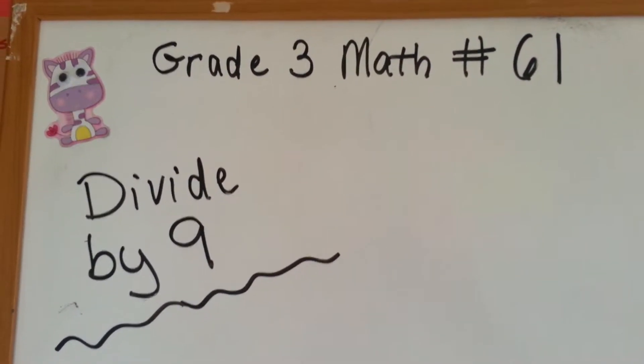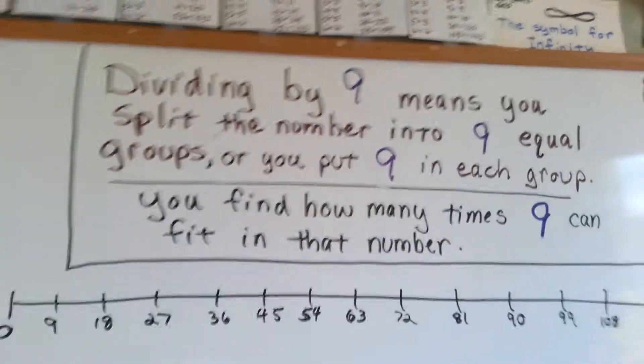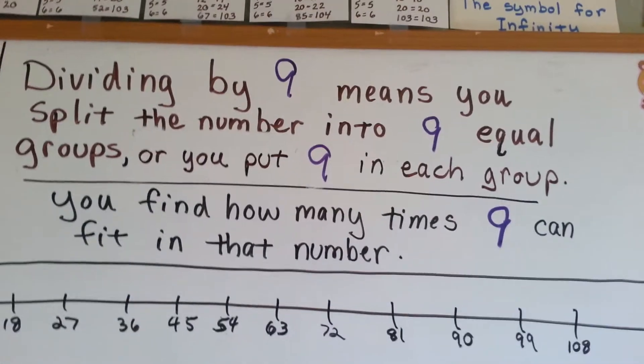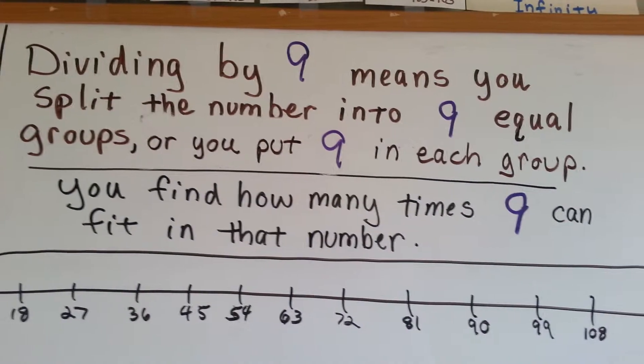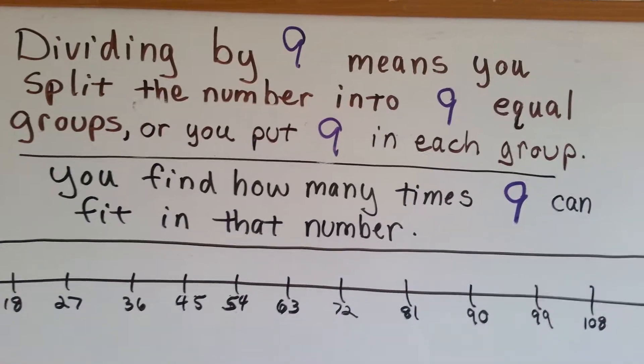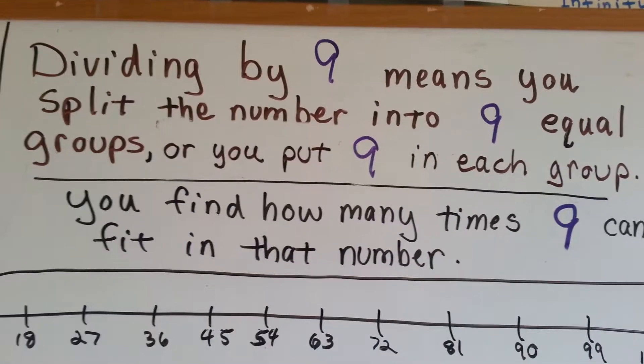Grade 3 math number 61 divide by 9. Here's our rules. Dividing by 9 means you split the number into 9 equal groups or you put 9 in each group. Either way you could do it. You find how many times 9 can fit into that number.